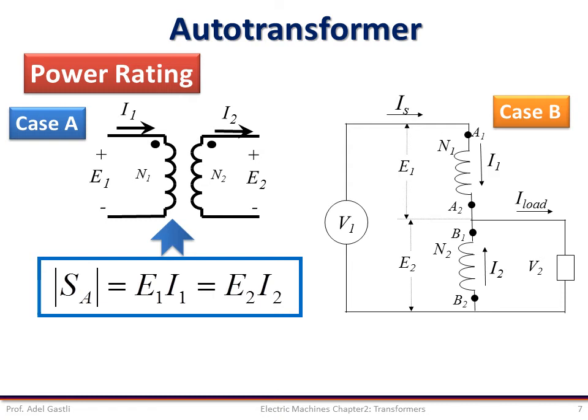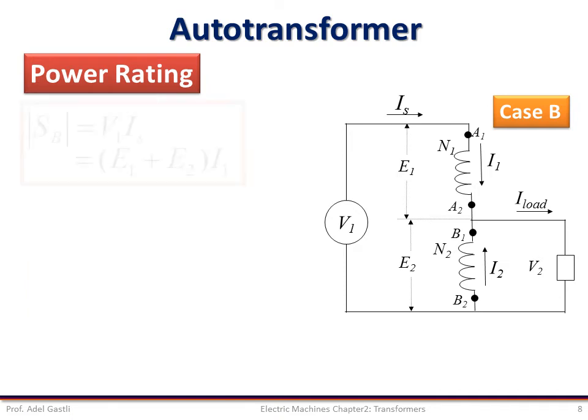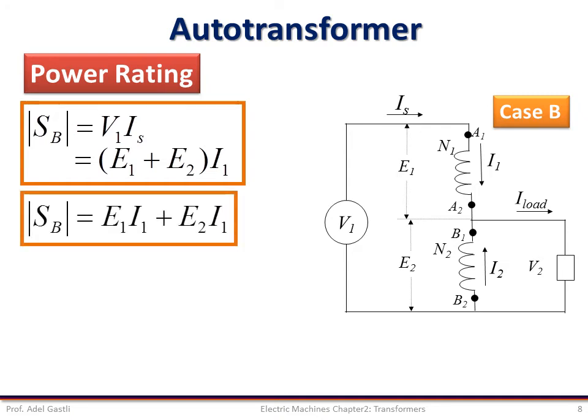The total apparent power SA for case A is equal to E1 I1, which is also equal to E2 I2, while the total apparent power SB for case B is equal to V1 IS, which is also equal to V2 ILOAD. Based on the equivalent circuit, we know that V1 is the sum of E1 and E2. So, we can write the power for case B, SB equal E1 I1 plus E2 I1.